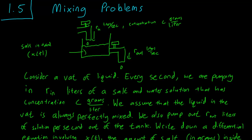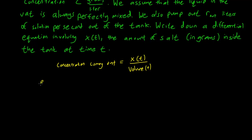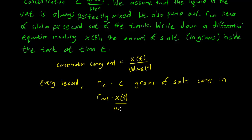So every second we have R_in, so let's write it down. So every second, R_in is the total number of liters of water coming in, multiplied by C grams of salt. And R_out times the concentration coming out, which is going to be X(t) over volume, grams of salt coming out.